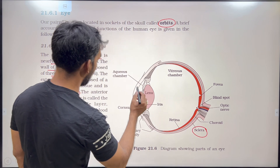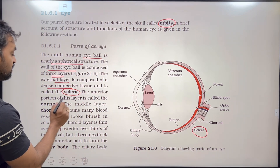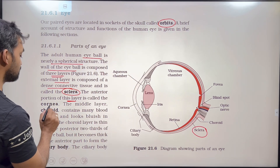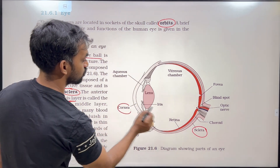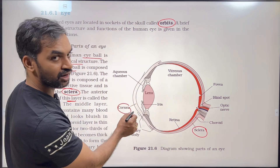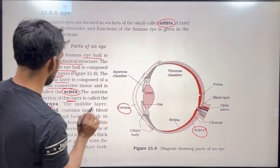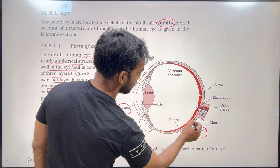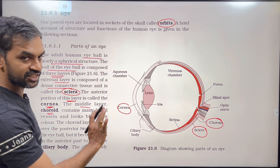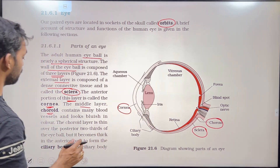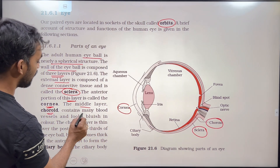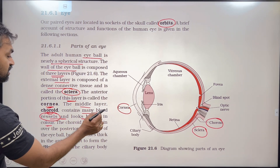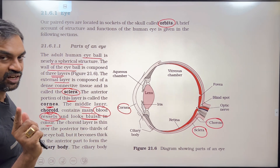The external layer is composed of dense connective tissue and is called the sclera. The anterior portion of the sclera is called the cornea. The middle layer is the choroid, which contains many blood vessels and looks bluish in color.